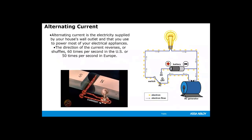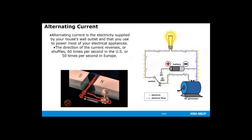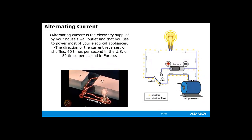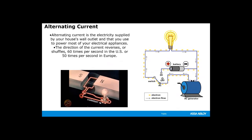Alternating current is the electricity supplied to our homes in household wall outlets. It is used to power most of our electrical appliances. The direction of the current reverses at 60 times per second in the United States and 50 times per second in Europe.